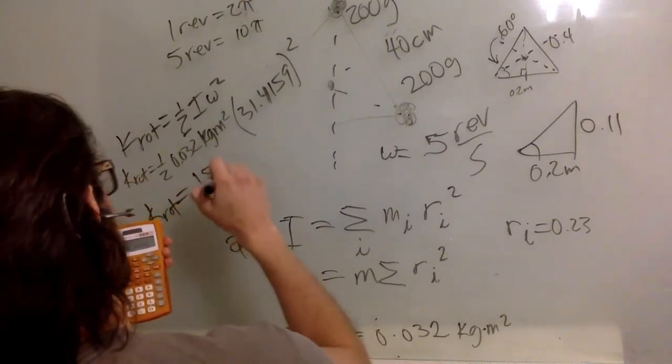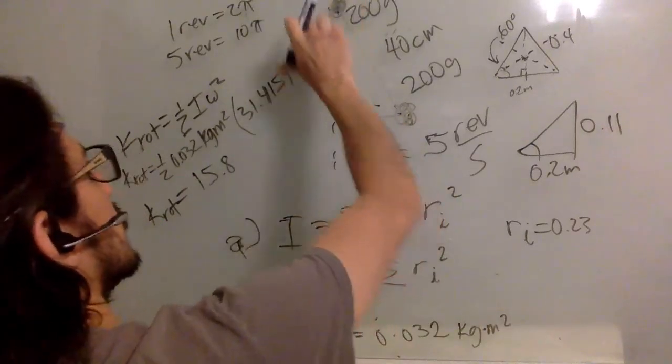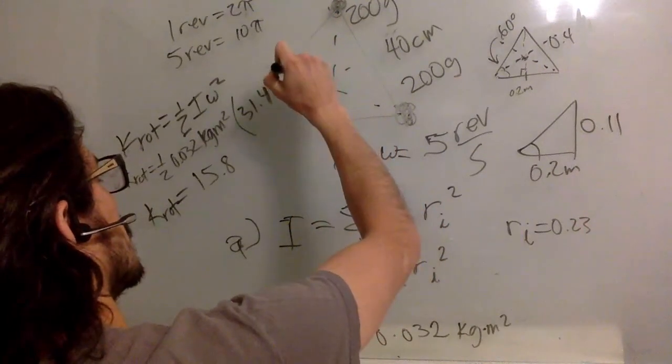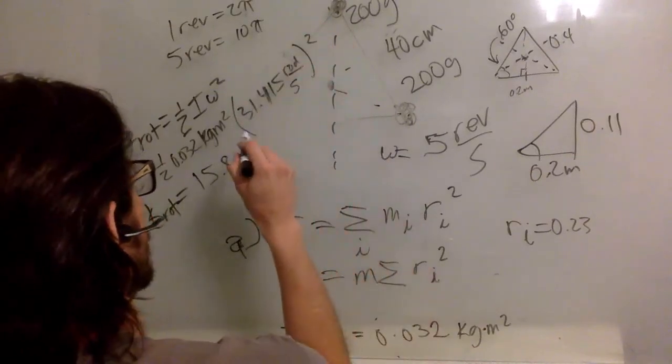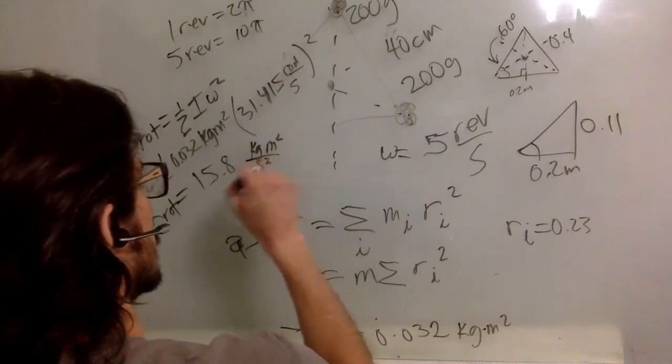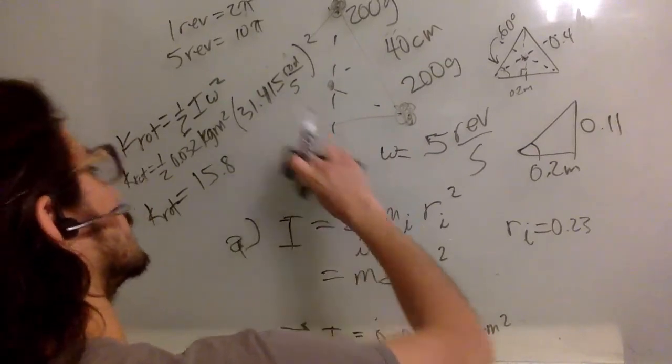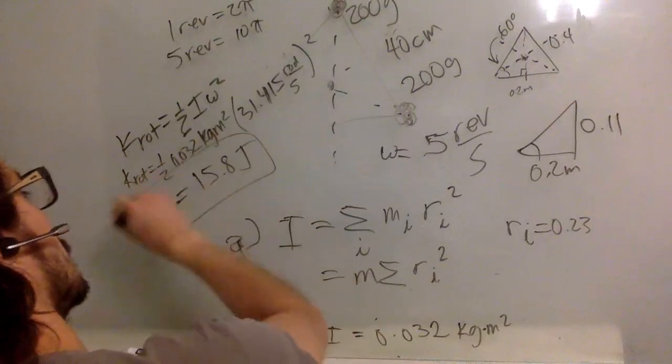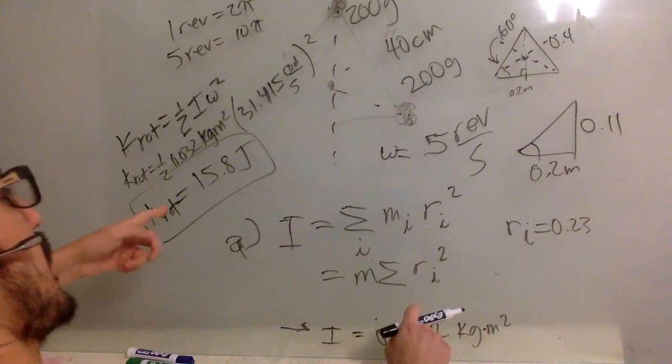So the rotational kinetic energy is 31.41 squared times 0.032 kilogram meter squared, divided by 2. So 15.8. Let's check the units. The units are kilogram meter squared divided by second squared. That's a joule. So this is in joules as expected from an energy.